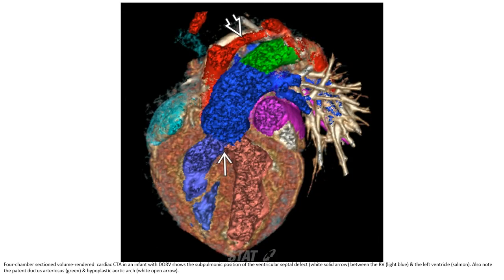The pulmonary artery and aorta are both rising from the right ventricle, with the VSD seen between the right ventricle and the left ventricle. This is also seen in patients with a patent ductus arteriosus and hypoplastic aortic arch.